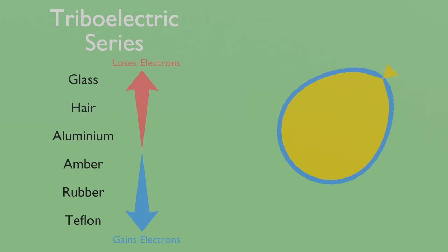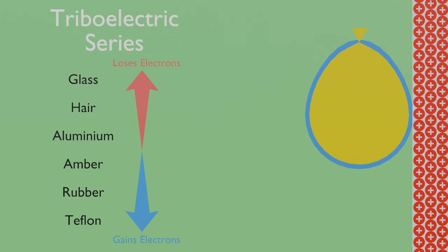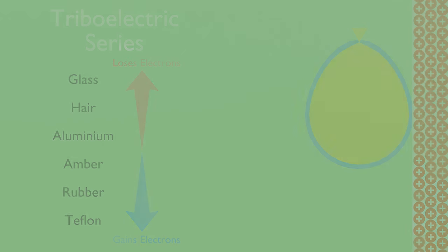With this negative charge, the balloon is now attracted to the positively charged nuclei in the atoms of the wall, allowing it to be suspended in mid-air. So, how does the van der Graaf generator utilize this effect?